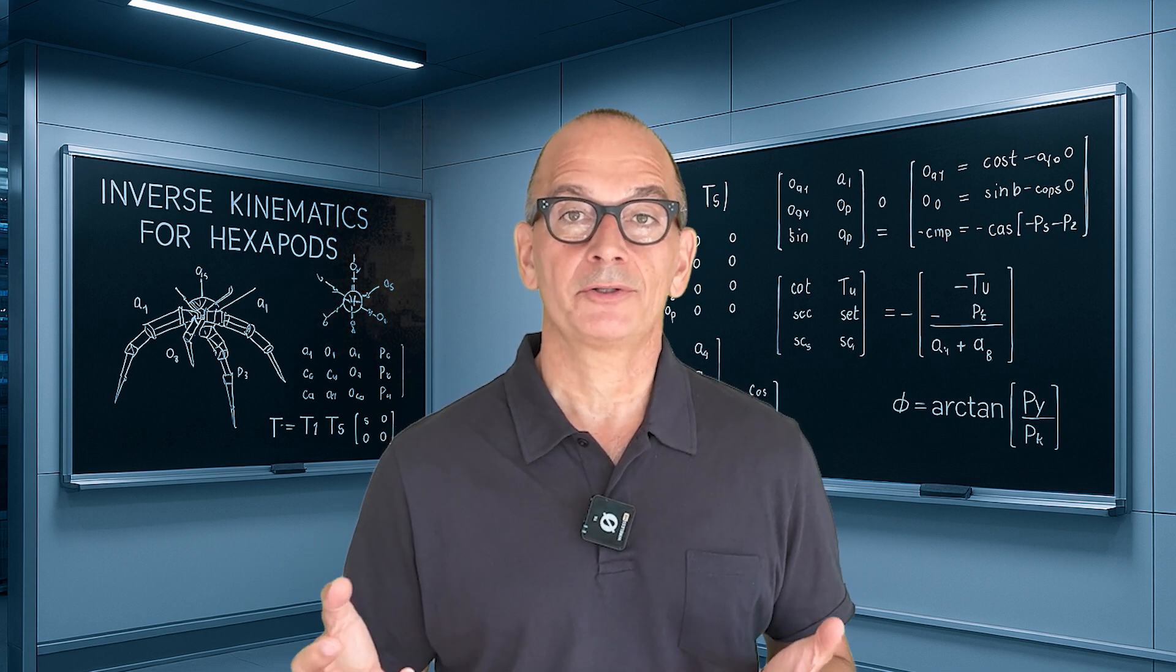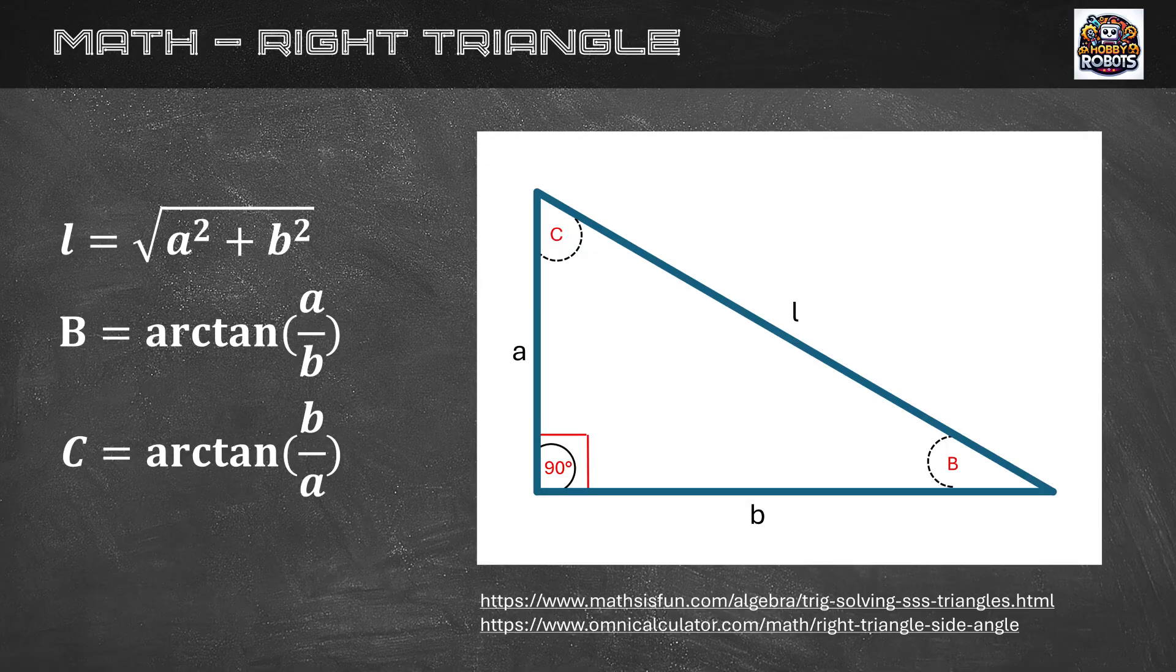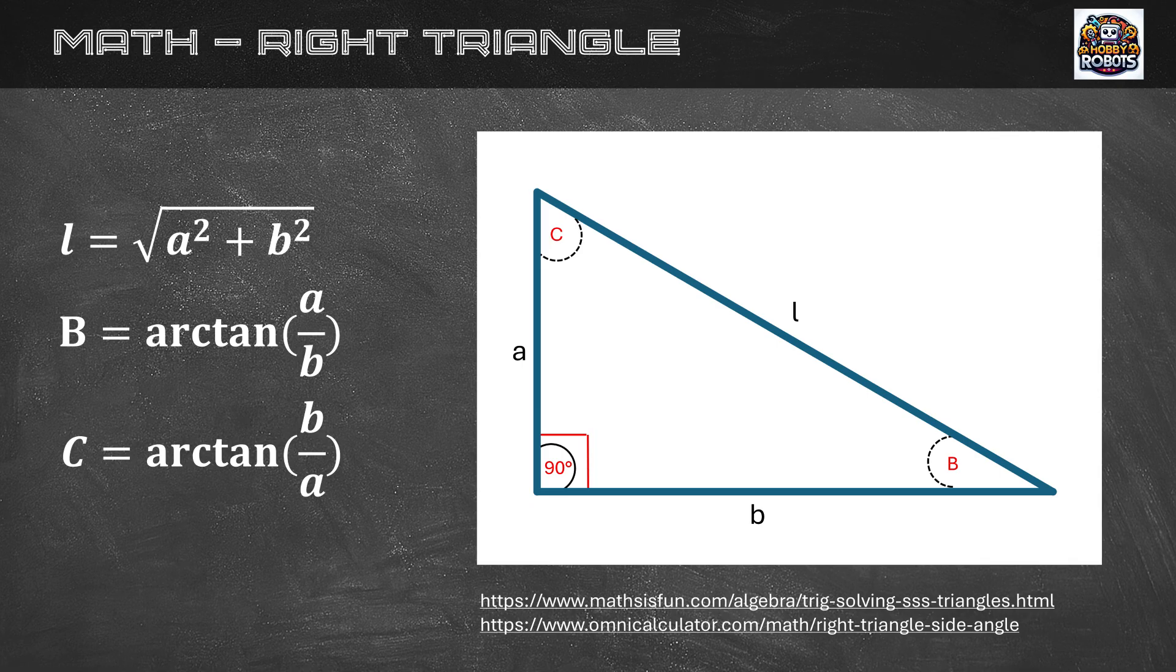The second type of calculations you need is how to calculate the angles of a right triangle. A right triangle is a triangle that contains one 90 degree angle also known as the right angle. If you know the lengths A and B, you can calculate the length of the last segment L using this simple formula and the angles B and C using these formulas.